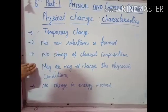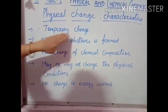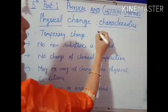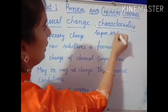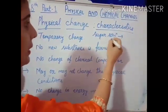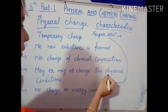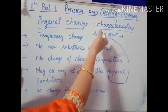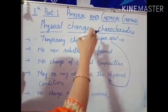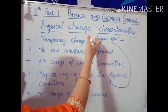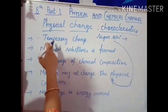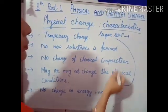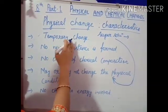The first characteristic is that it is a temporary change. What does temporary change mean? In the case of the sugar solution, the sugar's physical conditions changed, but the sugar still exhibits its property — that is, the sweet taste — meaning its internal chemical composition is not changed. It is called temporary because if you heat that solution again, you will get the sugar crystals back. It is not a permanent change.